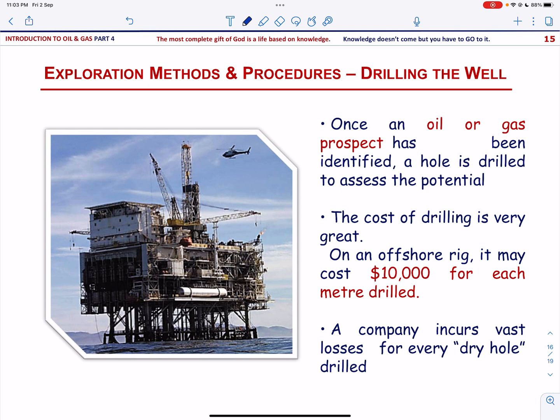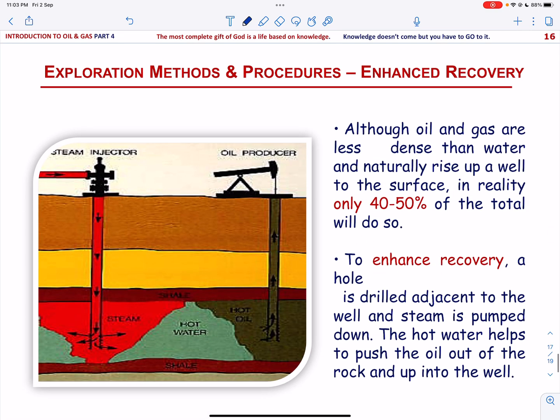Let us talk about how to enhance recovery of oil. If the geologist is lucky, he will strike oil and gas. A hole which contains oil and gas is called a well. The oil and gas is under considerable pressure in the earth's crust, so once a well is drilled into the reservoir rock, the oil and gas rapidly rises to the surface. However, as more and more oil and gas comes out of the well, eventually the pressure drops and flow slows down. To get the remainder of the oil and gas out of the reservoir rock, a second hole is drilled adjacent to the first one. Hot water or steam are pumped down the hole and this forces the oil and gas still trapped in the rock to go up the original well. This technique is called enhanced recovery.